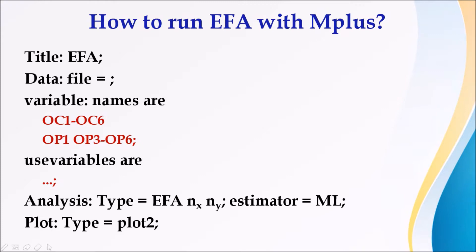Type equals EFA. Here give the range of the number of factors you are expecting from EFA. For example, if you are expecting 4 to 5 number of factors to be extracted from EFA, then you can write it: EFA space 4 space 5 semicolon. Then estimator equals ML semicolon. Then Plot colon, type equals plot2 semicolon.